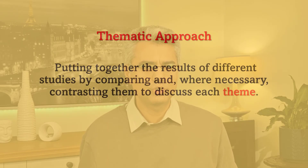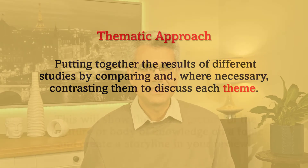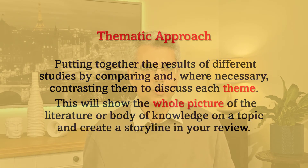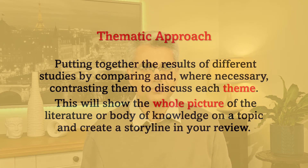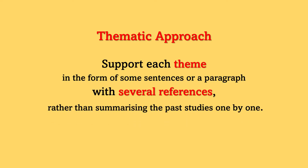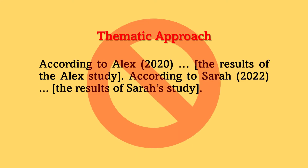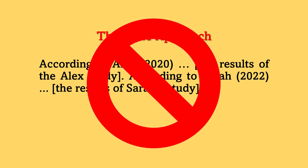I strongly recommend a thematic approach for writing your literature review. By thematic approach, I mean putting together the results of different studies by comparing and, when necessary, contrasting them to discuss each theme. This will show the whole picture of the literature on a topic and create a storyline in your review. Support each theme in the form of some sentences or a paragraph with several references, rather than summarizing past studies one by one — like 'according to Alex 2020... according to Sara 2022.' Instead of reviewing past studies one by one based on who said what, you review them based on the themes that emerge from putting together different studies. Use a storylining approach rather than reporting results of past studies individually.